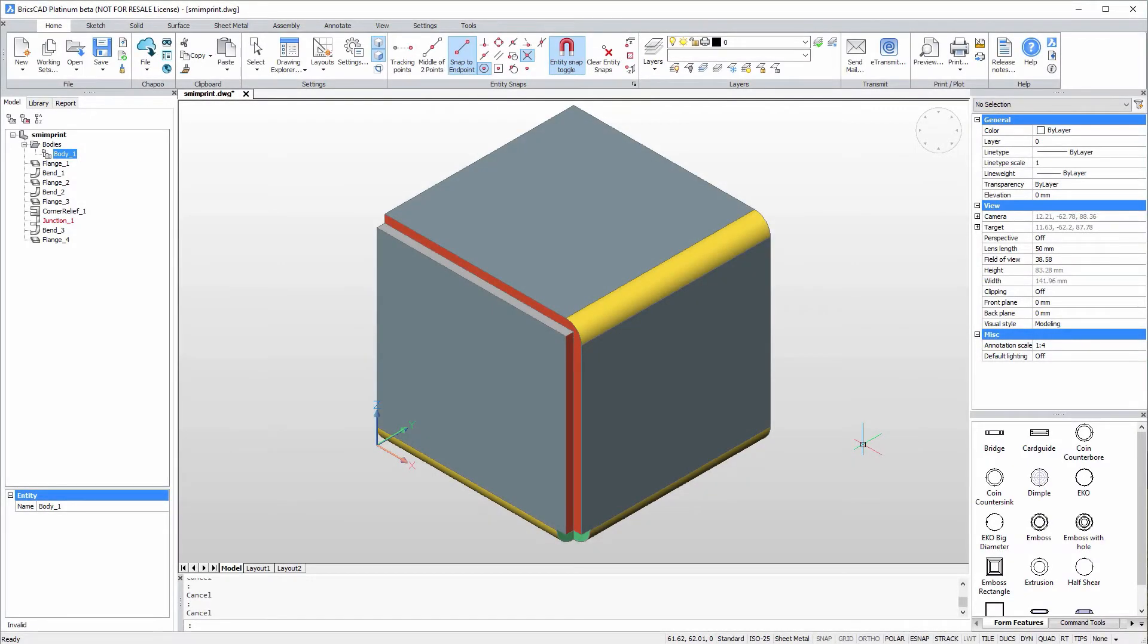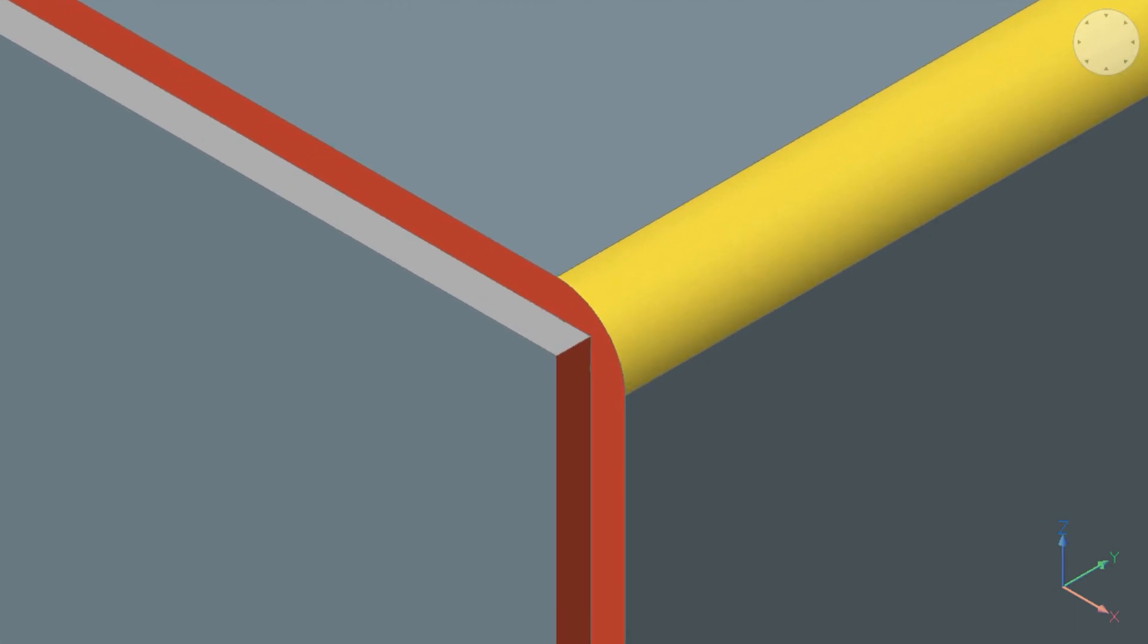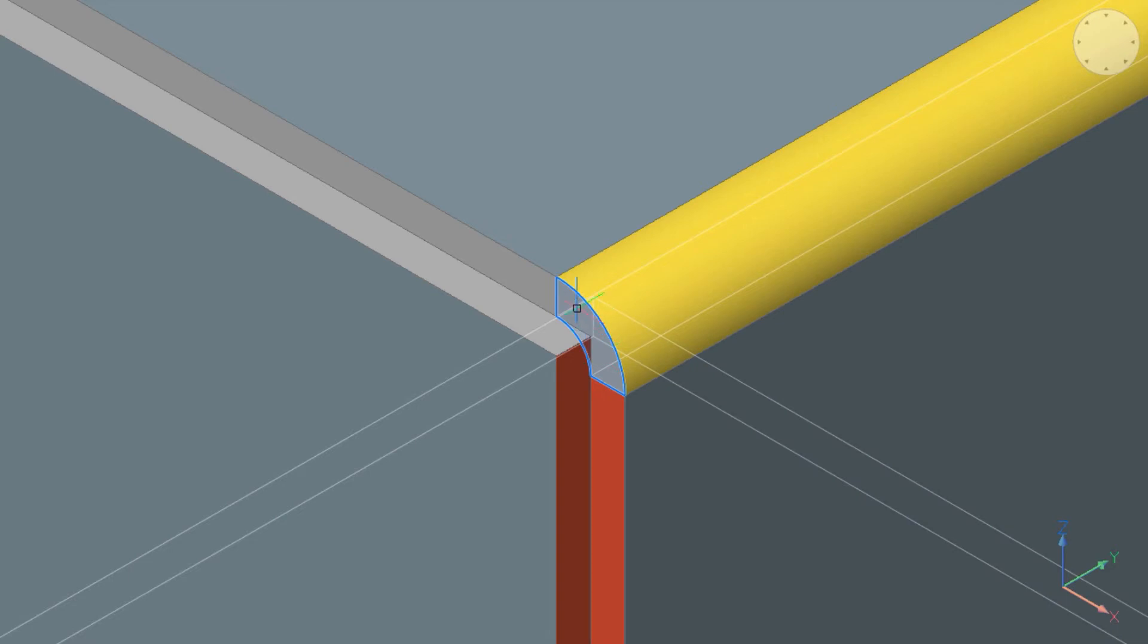Split thickness face is useful when one thickness face is adjacent to several flanges and bends. When splitting this thickness face, the invalid junction feature, highlighted in red, will become valid, so as to allow you to correct it.